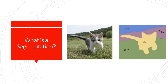The goal of segmentation is to create an image of the same size as the input image. The pixels of the new image should belong to one of four groups: cat, grass, sky, or trees.